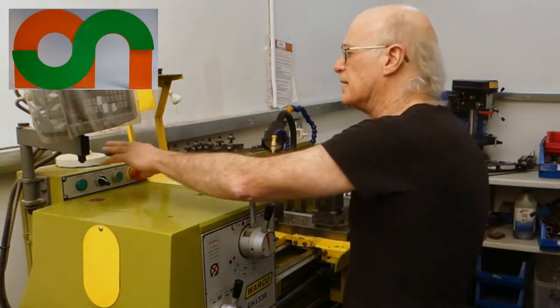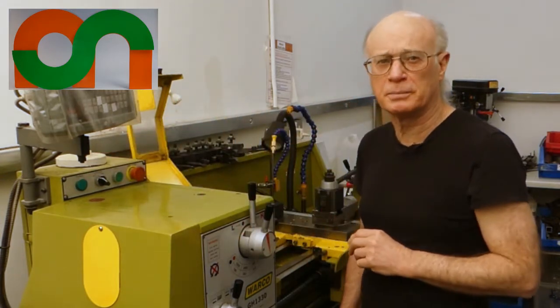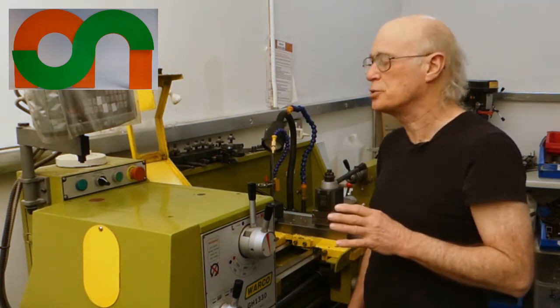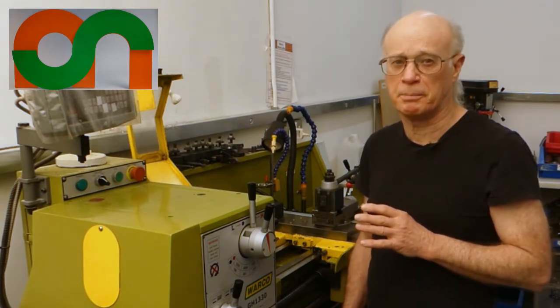At the top of the lathe is a small electrical control box which has a power light, a coolant control light, a jog switch and an emergency stop button.